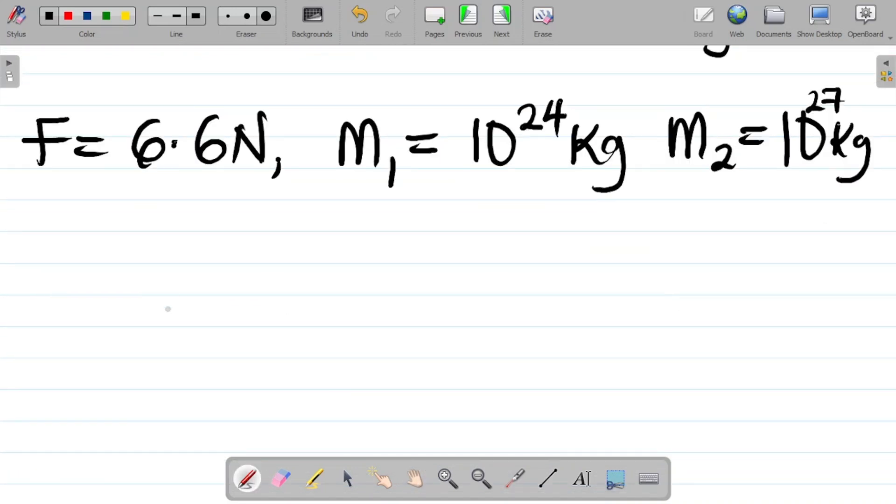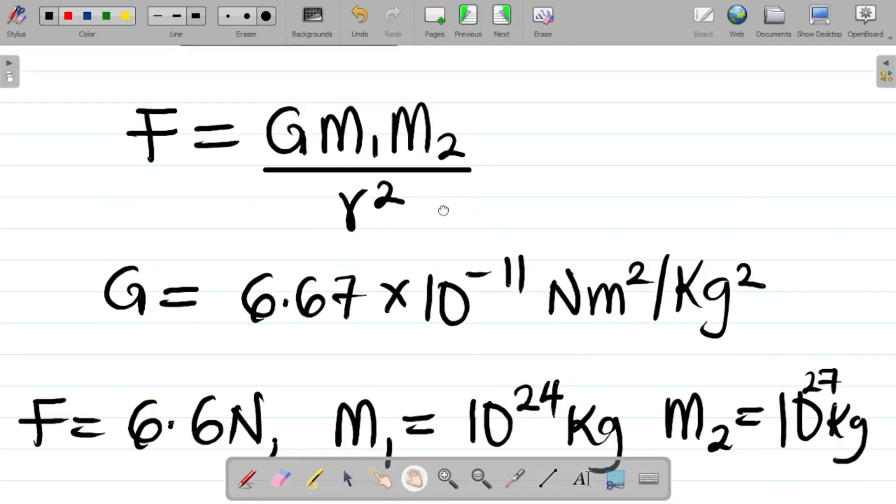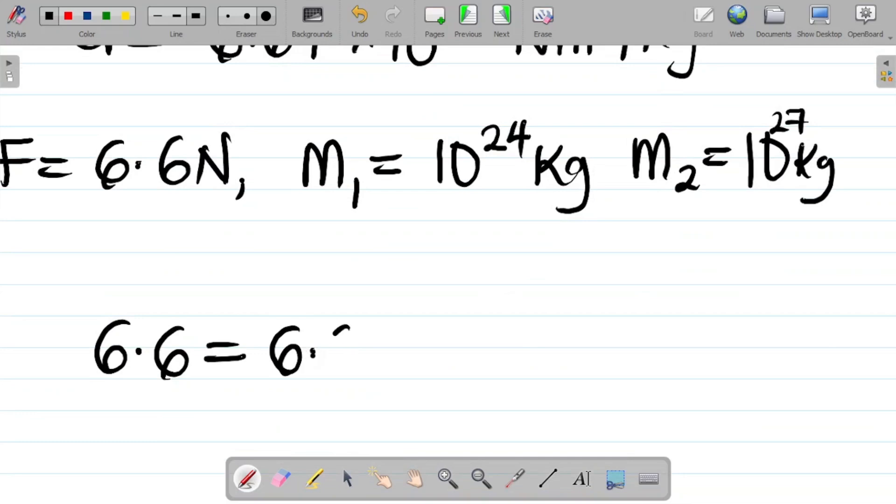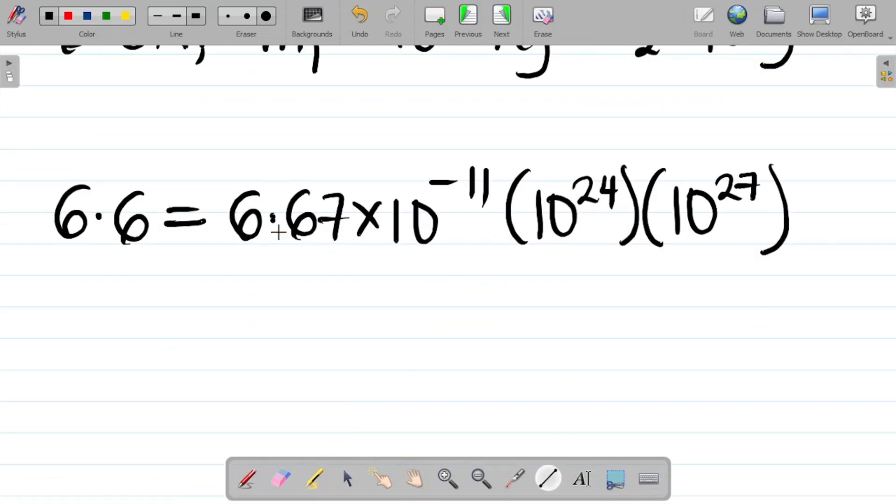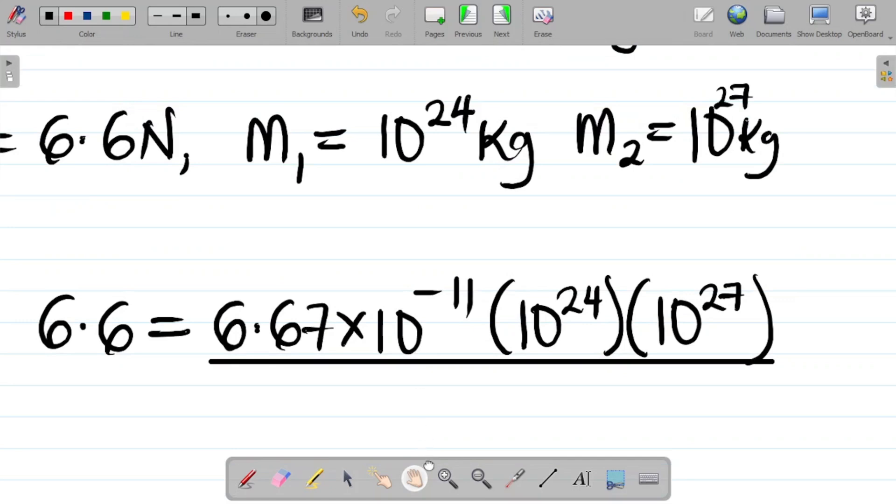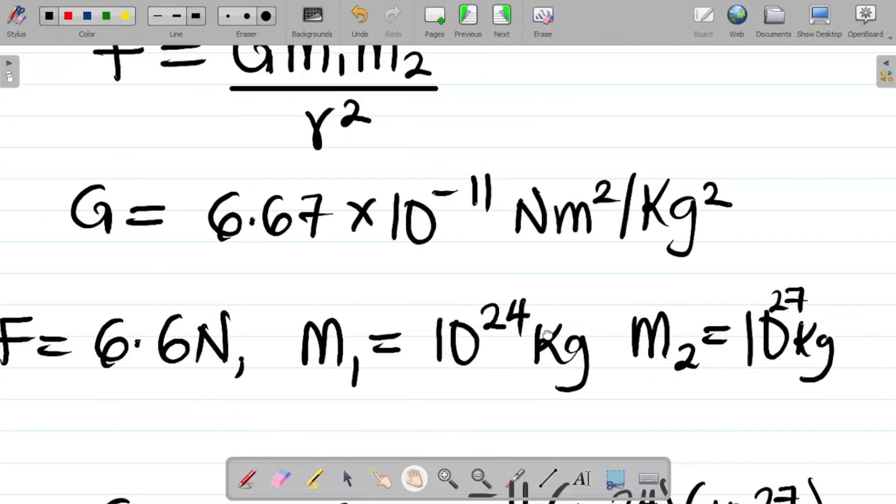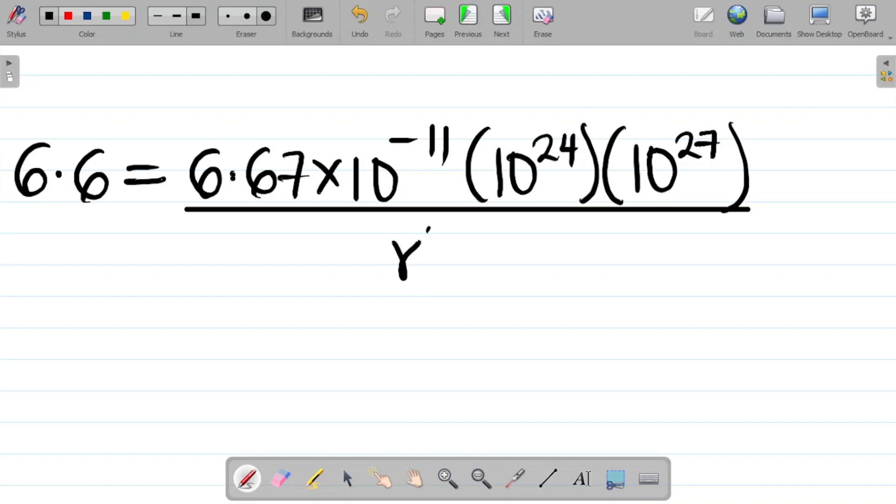For this we have that the force which is 6.6 is equal to G M1 M2 over R squared. G is 6.67 times 10 to power minus 11, into M1 which is 10 to power 24, and M2 which is 10 to power 27, all over R squared. This one here, all divided by R squared.